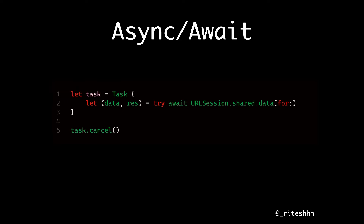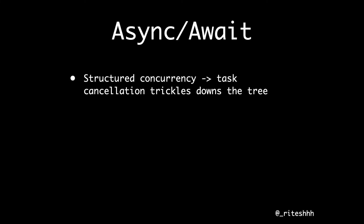Cancellation is a very important part because long-running operations take time to process. In Combine, you have a simple Cancellable that you can cancel when needed — like in viewDidDisappear or deinit callbacks. Similarly in async/await, if you wrap any async code in a Task API, the task is cancellable and you can cancel it later. Async/await revolves around structured concurrency, which means task cancellation trickles down the task tree — if a parent cancels, child tasks will also cancel. That's an extra benefit you get out of the box.